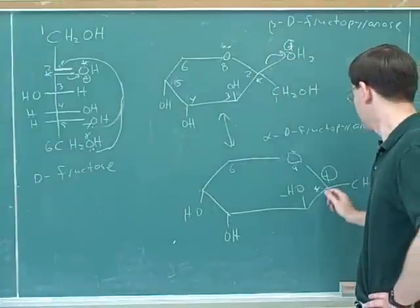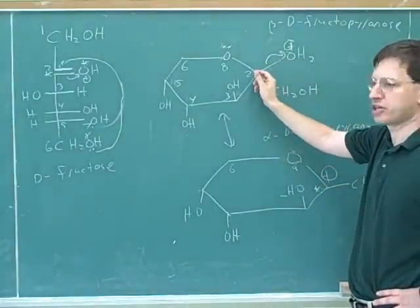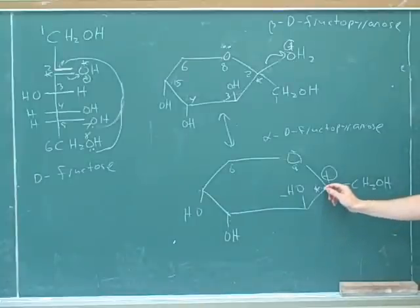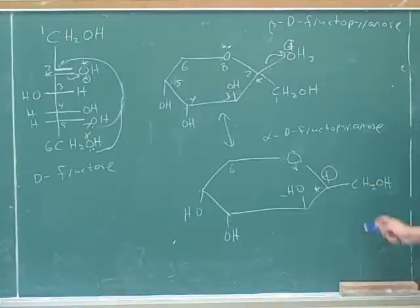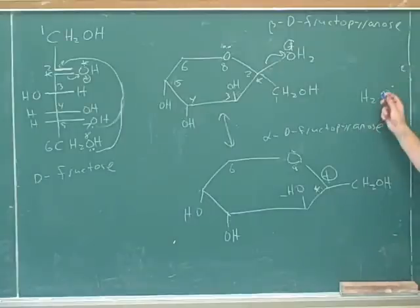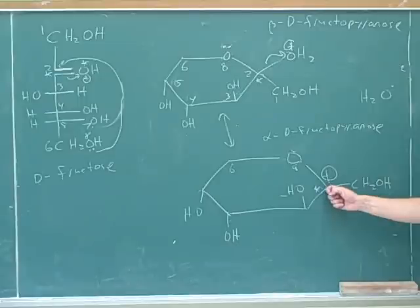So after the leaving group leaves, we're going to get this. Now, what is the geometry of this? What's the geometry of the number two carbon in this picture before the leaving group leaves? And what's the geometry after the leaving group leaves? Trigonal planar. So now I've drawn this out to the side. Now, what can happen now? Now the water could just come back. But when the water comes back, is it going to come back in an alpha, a beta position, or both? Both. Because this is trigonal planar. And we know that when we attack something trigonal planar, we can attack from either direction.